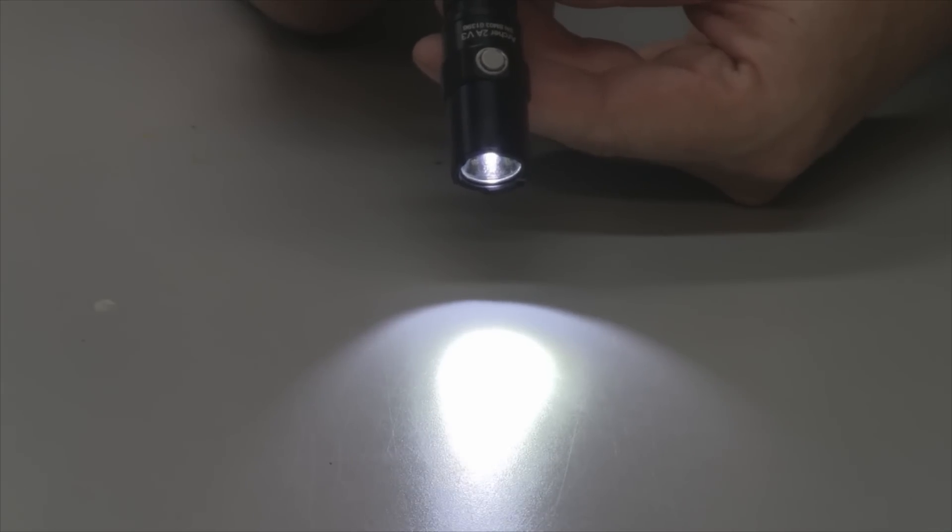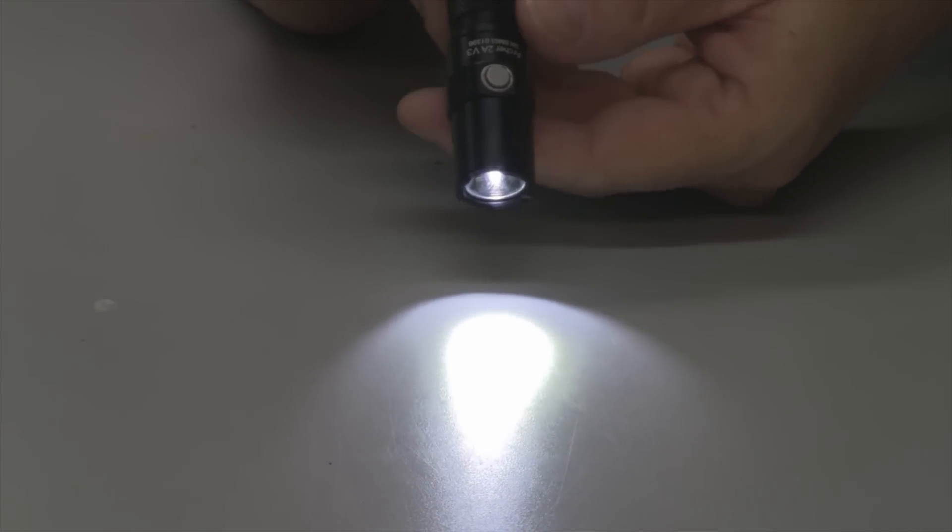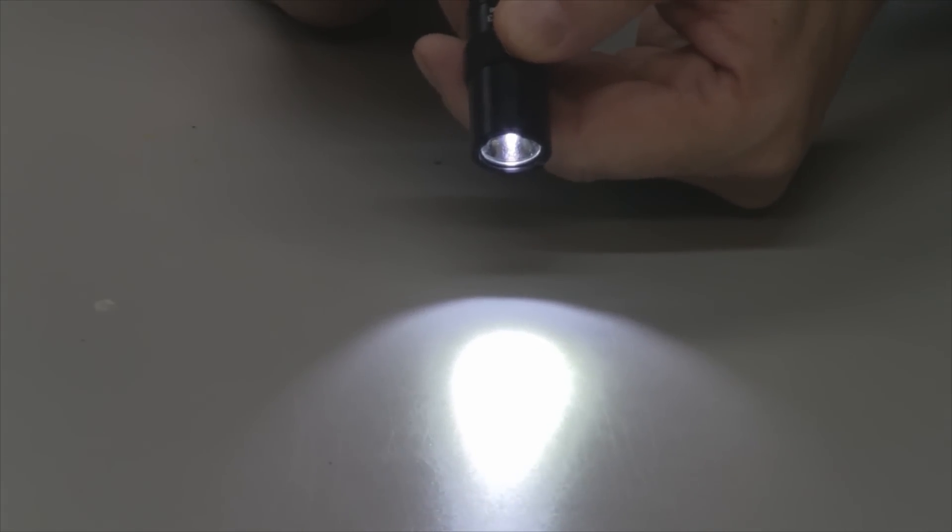And then the next level is medium. That's 75 lumen, and that'll go for 11 hours at that brightness level. The next level is high. That's 500 lumen, and that'll go for 96 minutes at that mode.